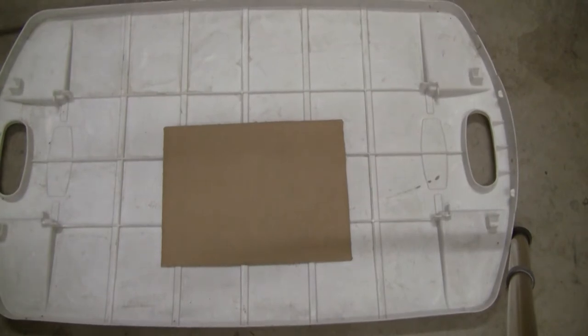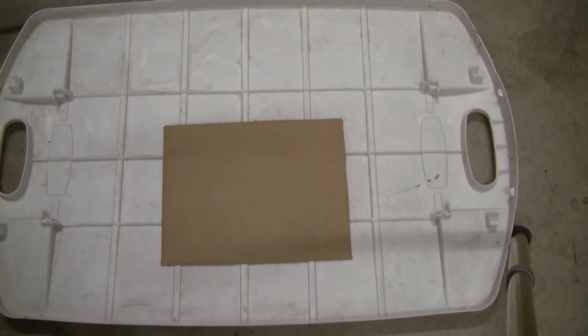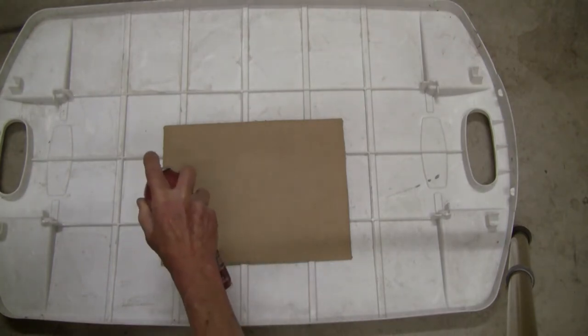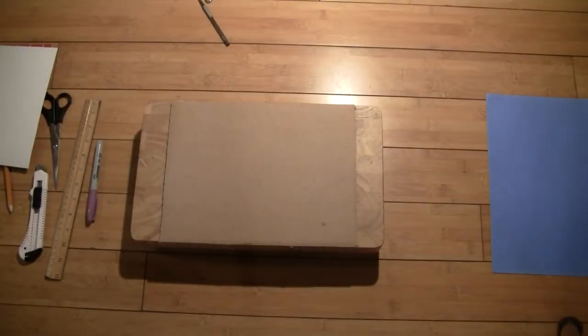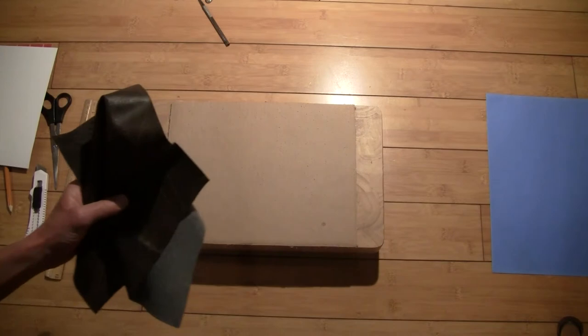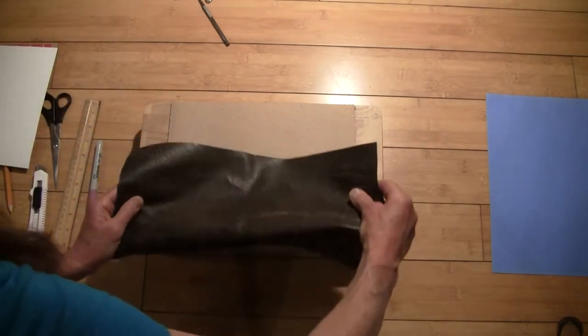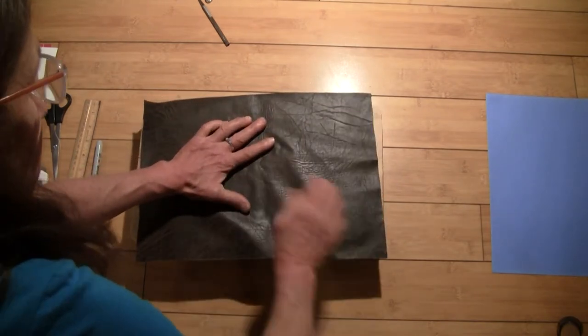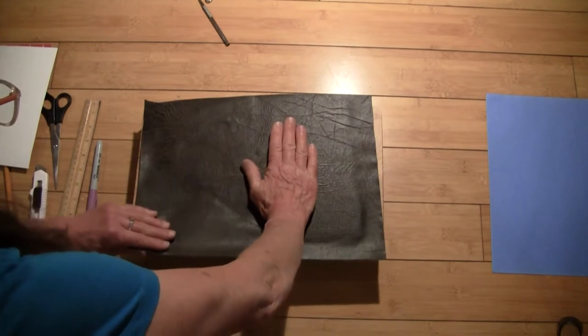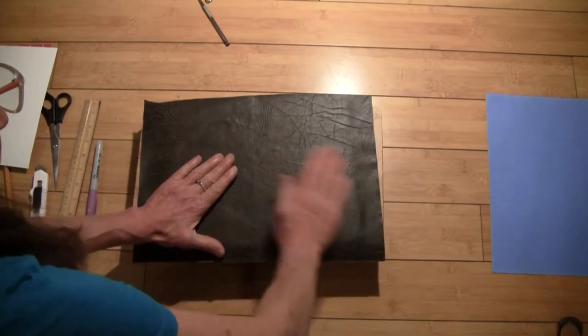For the fabric version of a journal cover, take your cardboard outside or in the garage and spray it with the spray adhesive. You want to spray the cardboard, not the fabric, because then it won't bleed through as much. You can also paint it with Elmer's. That works as well. I have the spray glue on my cardboard, so I'm going to lay the fabric over it and even it out. And then flip it over and trim off the edges.